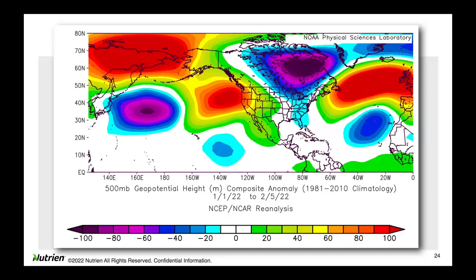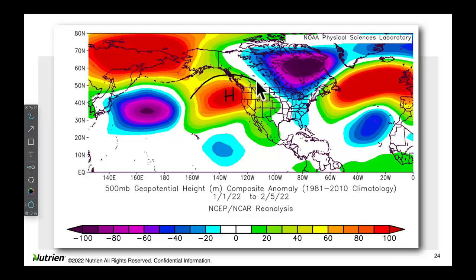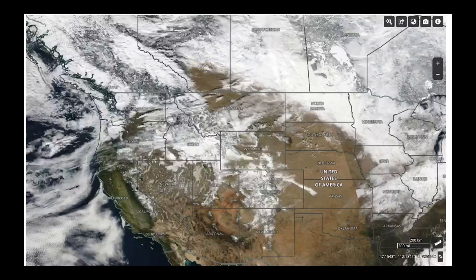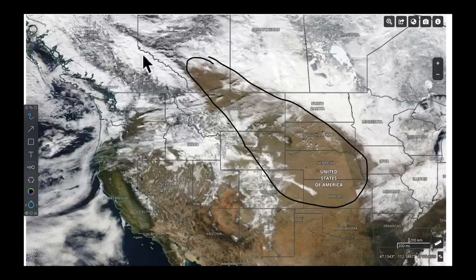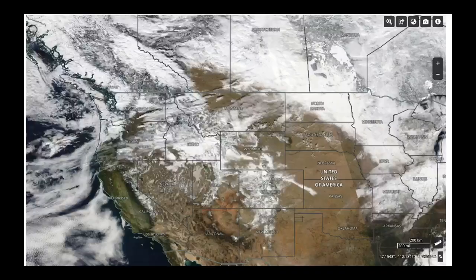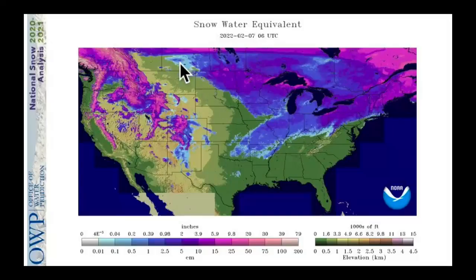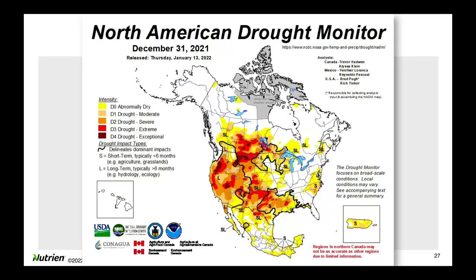Throughout the month of January into early February, we ended up getting a big ridge in the flow of the jet stream where the jet stream came over the top and then dove around a trough anchored over the Hudson Bay. In December that trough was there; in January it moved. This northwest flow brings in the clippers but doesn't bring the moisture we need during winter. Looking at satellite data from February 7th, there's a large area extending all the way down into the prairie and plains of the United States where we don't have snow on the ground. The snowpack in British Columbia is fantastic, but there's a region extending into Montana that has missed out on a lot of snow.